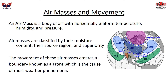An air mass is a body of air with horizontally uniform temperature, humidity, and pressure. Air masses are classified by their moisture content, their source region, and their relationship to each other. You can see on the diagram to the right some of the major air masses around North America. The movement of these masses creates a boundary known as a front, which is the cause of most weather phenomena.